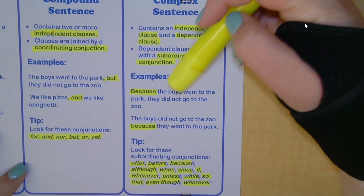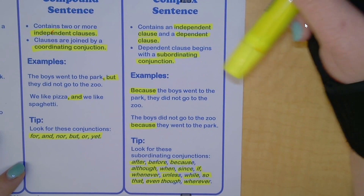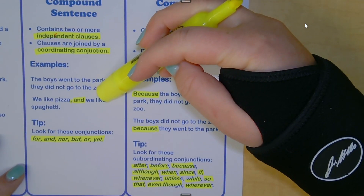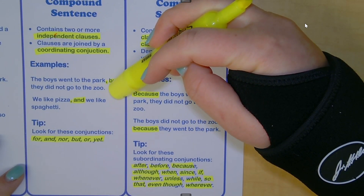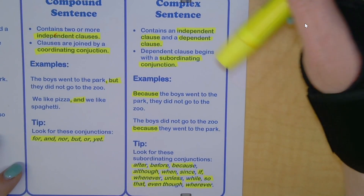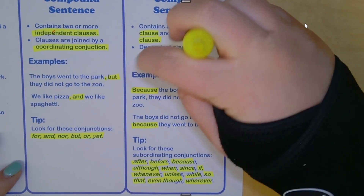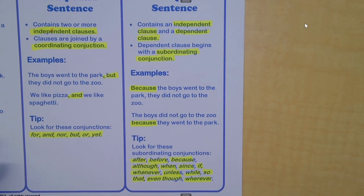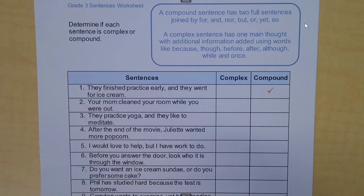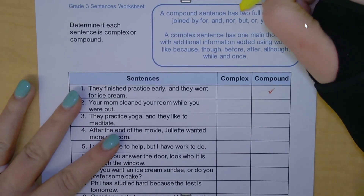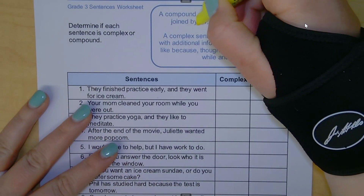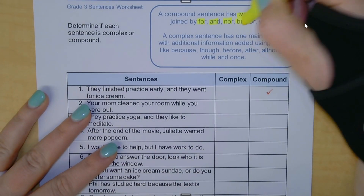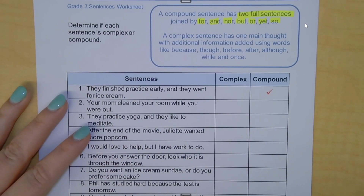With complex sentences, you're looking for the subordinating conjunction in front of the dependent clause. With compound sentences, you're looking for a comma and a coordinating conjunction in the middle connecting two smaller sentences. This has been uploaded into your Schoology so you can print it off to help you, especially for these clue words. As a reminder: a compound sentence has two full sentences joined by for, and, nor, but, or, yet, so — the coordinating conjunctions.